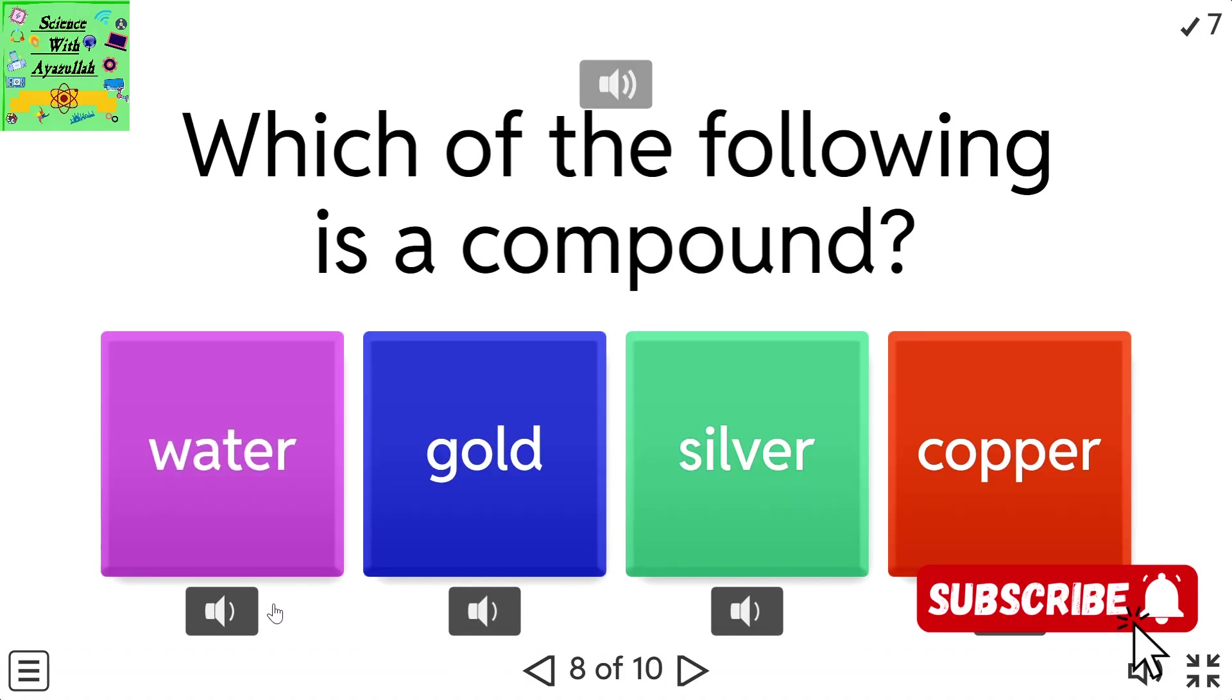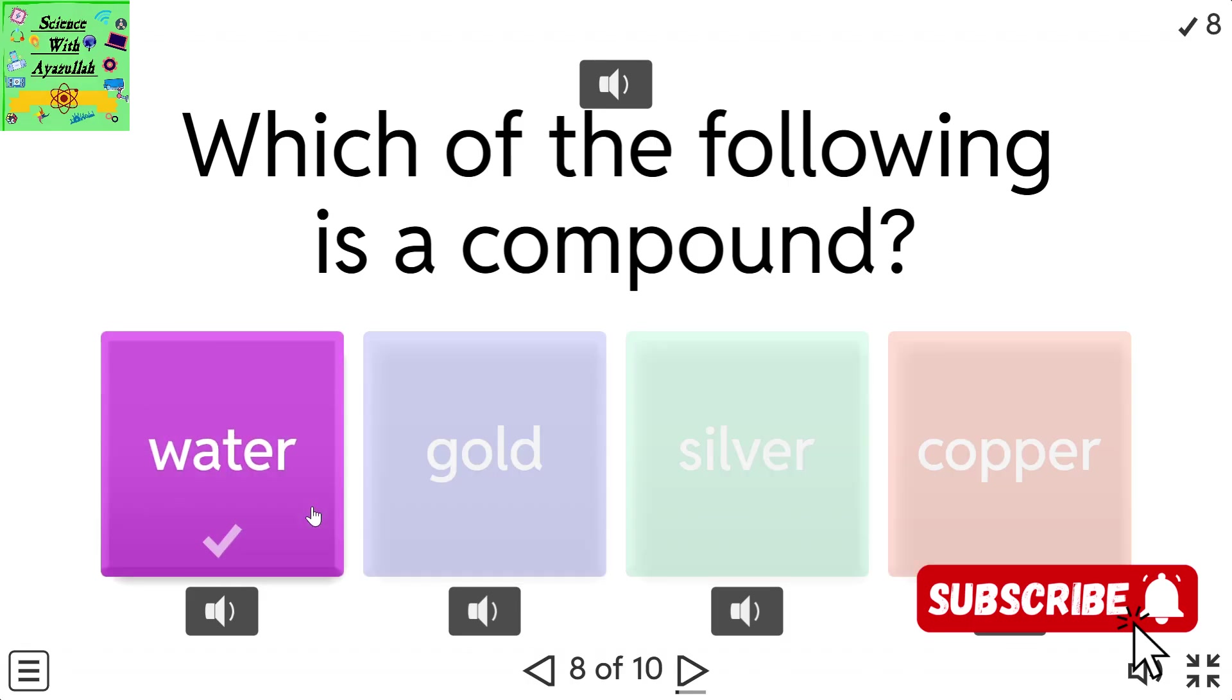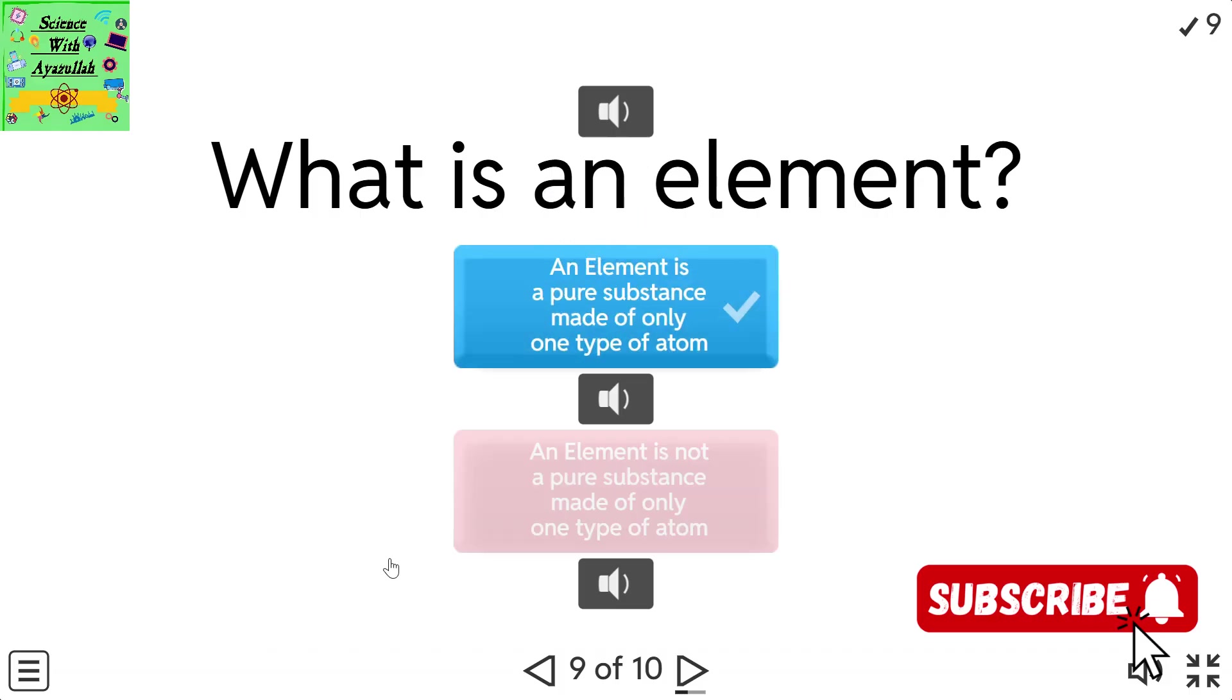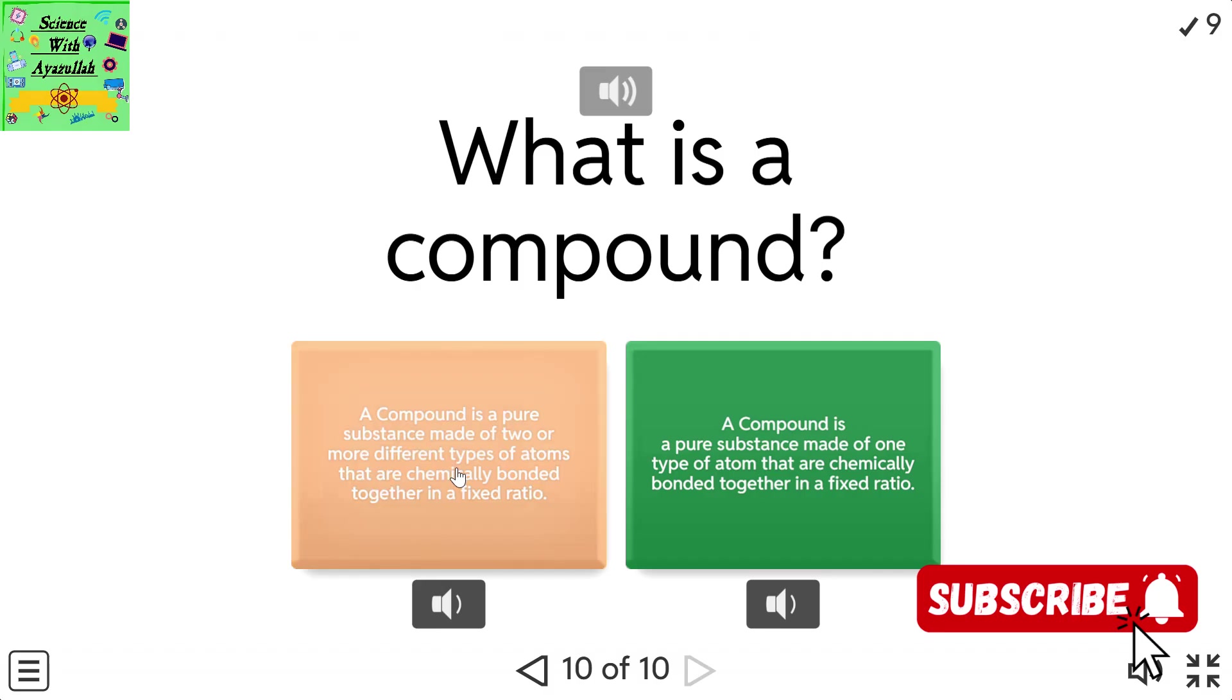Which of the following is a compound? Water, gold, silver, copper. What is an element? What is a compound? A compound is a pure substance made of two or more different types of atoms that are chemically bonded together in a fixed ratio. A compound is a pure substance made of one type of atom that are chemically bonded together in a fixed ratio.